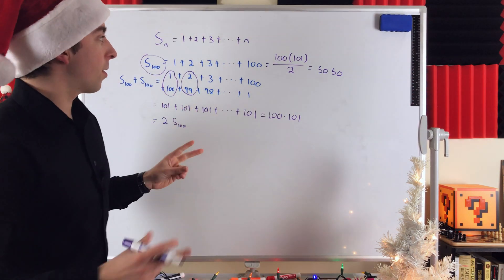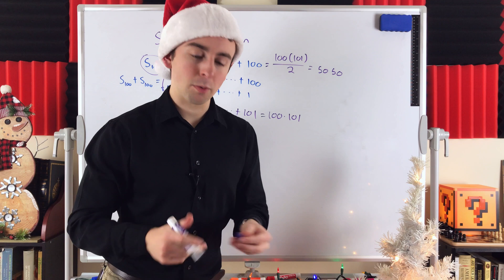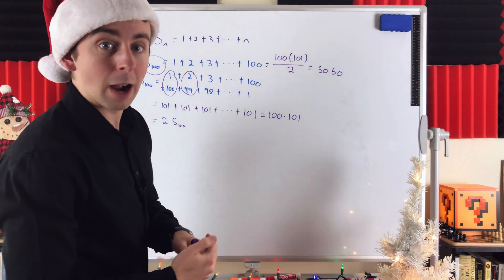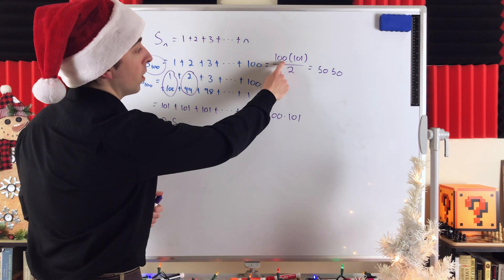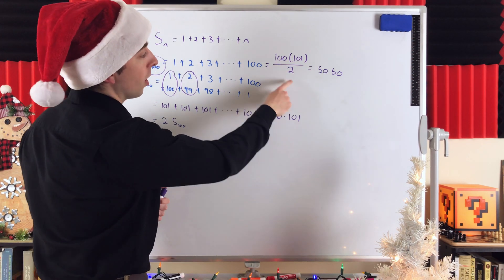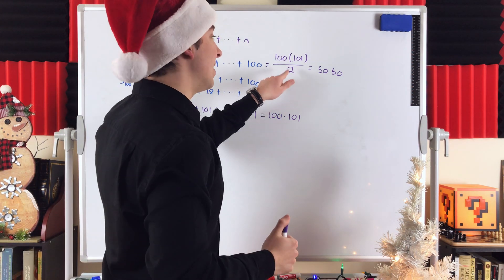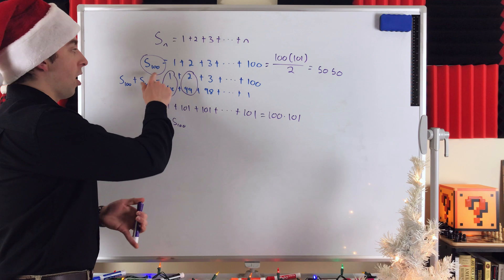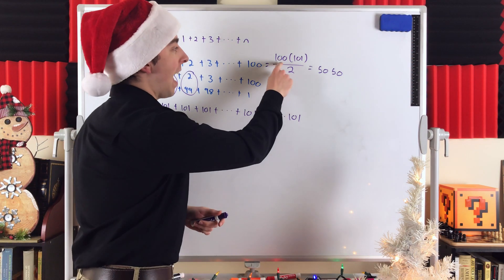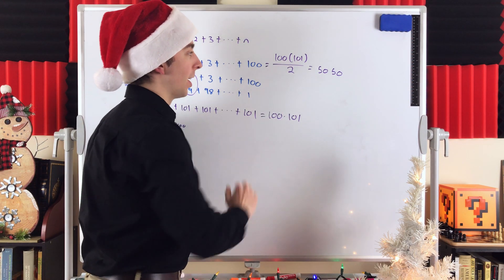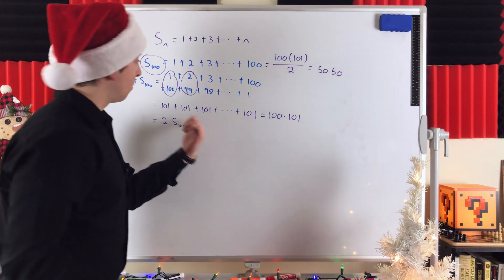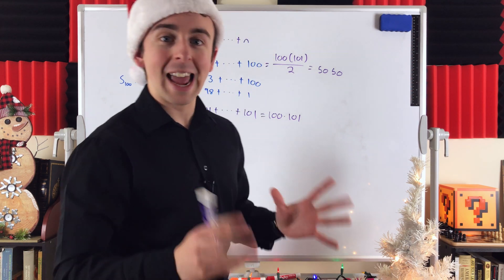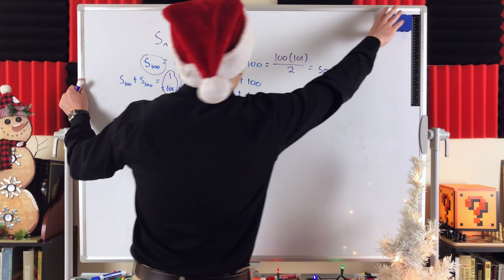So what we see here — what we're hoping might be a general formula — is that the sum of the first 100 counting numbers is 100 times the next number, 101, divided by 2. So let's apply this really cool, ingenious trick to the general sum of the first n counting numbers and see how it plays out.